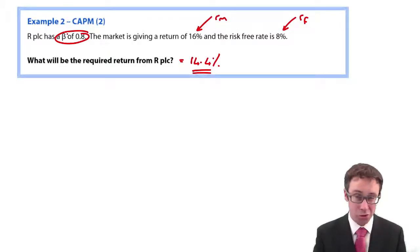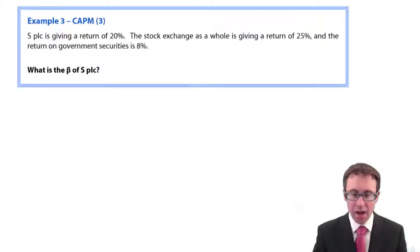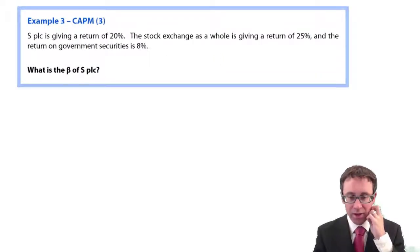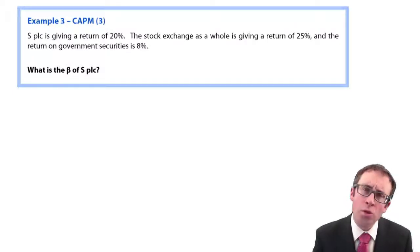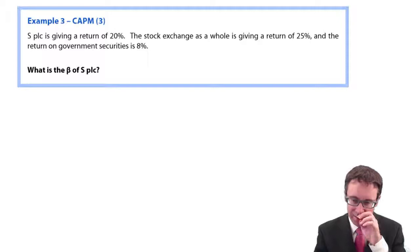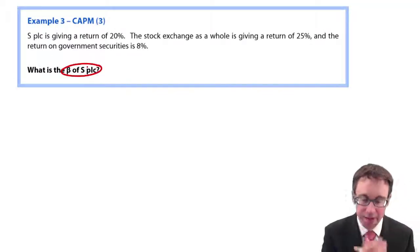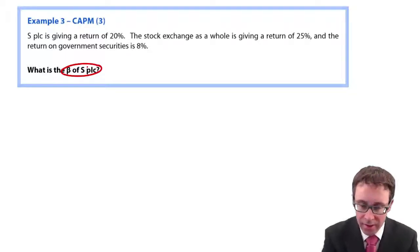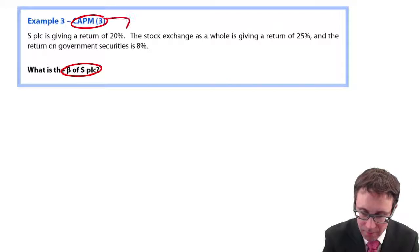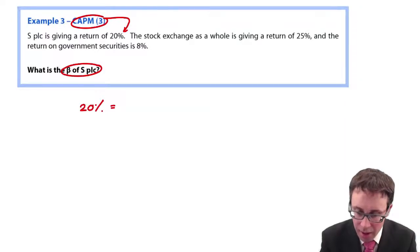Move on. Let's move on. Next one. Example number three. Just playing around with it just ever so slightly. It says, what is the beta of S plc? So, what we've got there is the CAPM return is there as 20 percent. So, we're going to need to rearrange some formulae. RF is there as 8 percent. RM is 25 percent.